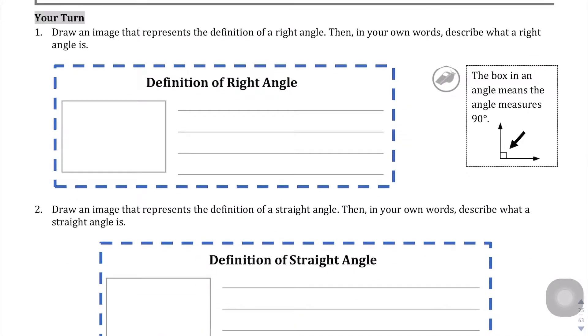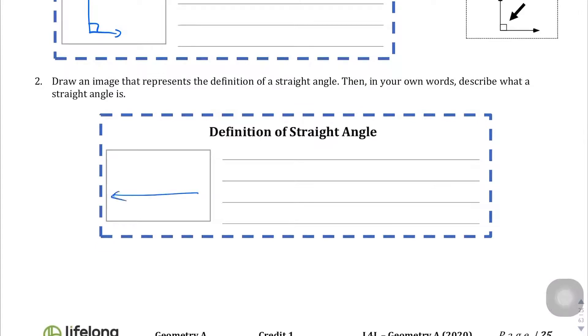In your turn, definition of a right angle, they want you to draw one first. Kind of silly, because right above there's one right there. Definition of a right angle: an angle that is 90 degrees. Definition of a straight angle: it's just a straight line. An angle that equals 180.